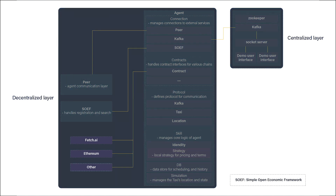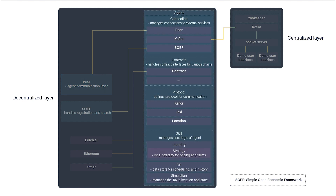We have the blockchain — this can be any number of blockchains that the agent accepts payments in. The SOEF handles registration of an agent and search. The peer-to-peer layer allows the agent to communicate with other agents. The agent is made up of many parts: the connection object handles the agent's community connection and communication to Kafka, peer-to-peer, and SOEF.